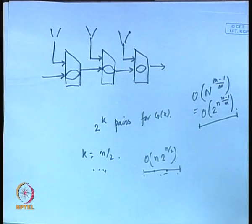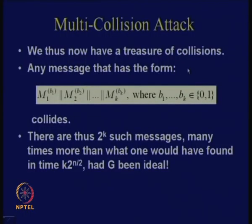This attack is commonly known as the multi-collision problem. You have a treasure of collisions — any messages which have the form of these constructed messages will collide. Therefore, there are 2^k such messages — many more than what one would have found in time k * 2^(n/2) had g been ideal. In time k * 2^(n/2), if g would have been ideal, you would have got far fewer colliding messages, but here you have got 2^k messages, which is quite large.